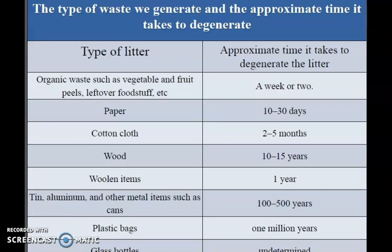This chart shows the approximate time required for certain types of waste to degrade. Organic waste such as vegetable and fruit peels, leftovers and foodstuffs takes only one to two weeks. Paper takes 10 to 30 days. Cotton cloth takes 2 to 5 months. Wood takes 10 to 15 years. Woolen items take almost 1 year. Tin, aluminium and other metal cans take 100 to 500 years. Plastic bags take about 1 million years, and for glass bottles, the time is not even determined.